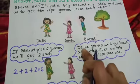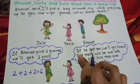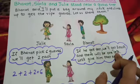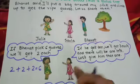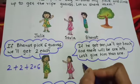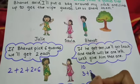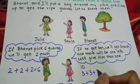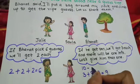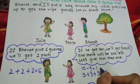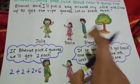Then Sarla says, 'If he gets ten, we will get three each and there will be one left — let's give that one to him.' If he brings ten guavas, each gets three: three plus three plus three is nine, and ten minus nine is one. One will be remaining, so Sarla says that one guava we will give to Bharat.